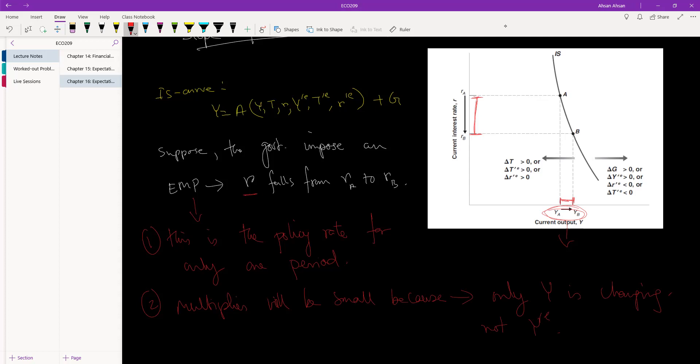When the government changes the policy rate, whether it be an expansionary or a contractionary monetary policy, they can only change the interest rate and effectively the income for this period. But once we've included expectation into the mix, for there to be a large enough change, we also need the expectation to change.